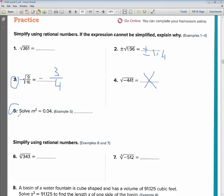Now, solving equation. Solve m squared equals 0.04. And how do I solve that? 0.04. So we're going to do the factorization. I mean, it's 4 over 100.